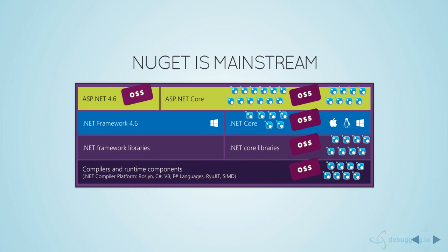Another important aspect of ASP.NET Core is that everything is shipped as NuGet packages, including the runtime itself. You can install the runtime using a NuGet command. The core libraries, the runtime, ASP.NET Core — every part of the framework is shipped as NuGet. NuGet is the package manager for the .NET ecosystem with tens of thousands of libraries already available. NuGet is now mainstream in ASP.NET Core.